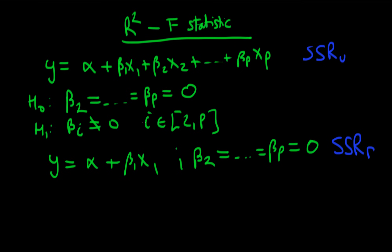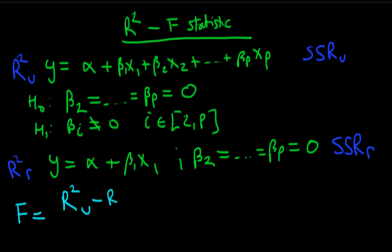Unsurprisingly, we can do exactly the same sort of test but using the R-squared. So we get our R-squared for our unrestricted model and we get an R-squared for our restricted model. We expect the R-squared for the unrestricted model to be greater than the R-squared for the restricted model, because R-squared is our measure of the ability of the model to explain variations or deviations in y away from its mean. So we form our numerator by taking the R-squared for the unrestricted model and taking off the R-squared for the restricted model.